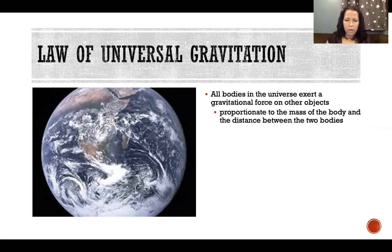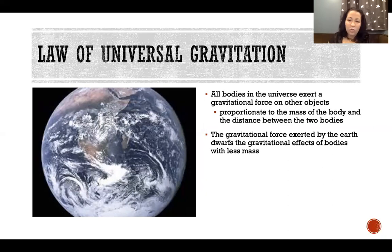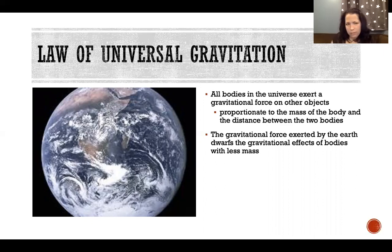The law of universal gravitation states that all bodies in the universe exert a gravitational force on other objects, proportionate to the mass of the body and the distance between the two bodies. The gravitational pull of the earth dwarfs everything else. The moon's gravitational pull does affect our tides and is theorized to affect fluids in our bodies, though that may not be fully scientifically demonstrated.